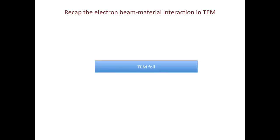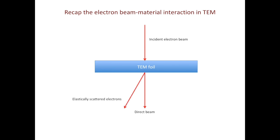Just one slide to recap what we have learned about electron beam-material interaction in TEM. We have the electron beam from the electron source shining on the specimen. Some of the electrons will just go through without any scattering — this is called the direct beam. Some will be elastically scattered, forming diffraction patterns. Some will be inelastically scattered. The energy loss from the electron beam is gained by the material, and this excess energy is released as characteristic X-rays. Analyzing the energy of the characteristic X-rays tells us the chemical information, and this is the fundamental principle of EDS.